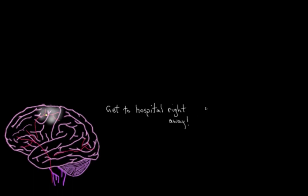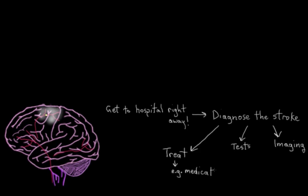So now that we're at the hospital, what goes on there? What's gonna happen? Well, a few things are gonna happen. The plan is to diagnose the stroke with some tests and some imaging, and then to treat the stroke with some medications. So let's take a look.